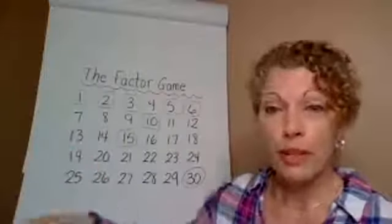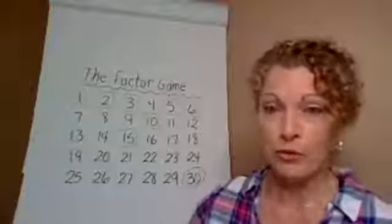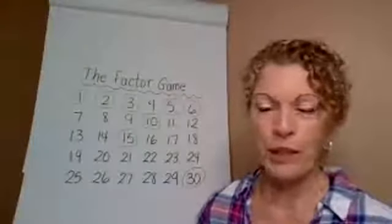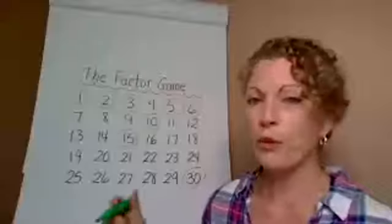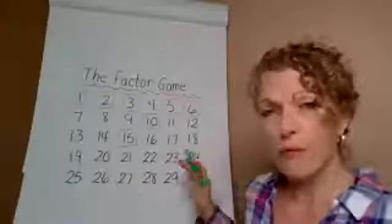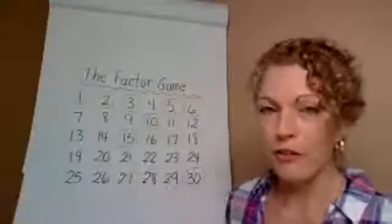As we're doing this, I do have scorekeepers. I'll have one person keep the score for the students and one person keep the score for me. And I'll also have somebody doing it on a calculator to get the running total. So after that first turn, they pick 30. I get all the factors.